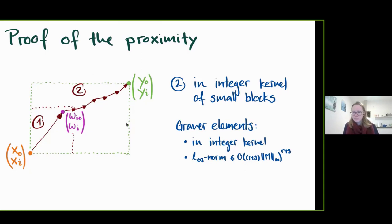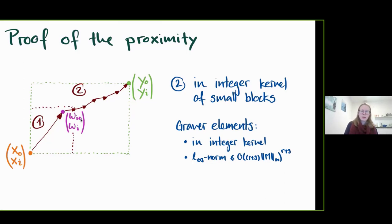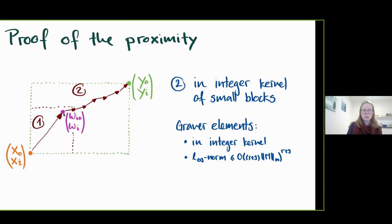To clarify: w_0 is the first block, the global variable, and w_i is the local variable. The main problem is that when doing things locally, we lose consistency on the global variables. For each block, the local w_{i,0} component can be different, so w is not actually a valid integer solution of the full program.